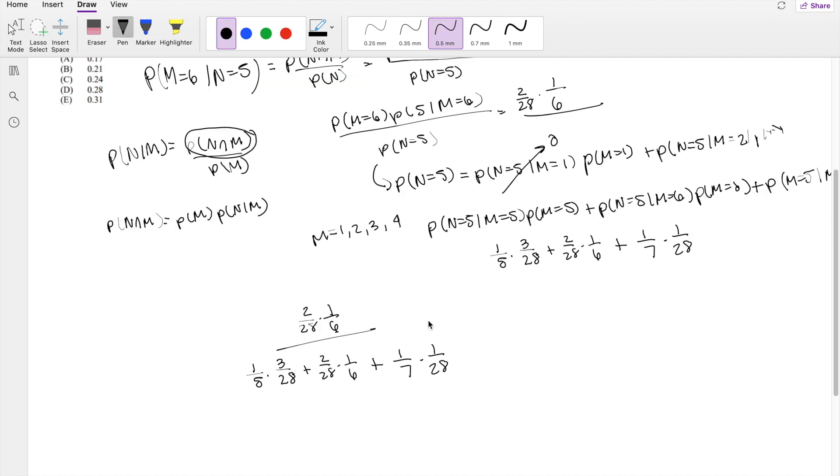So everything you can see is multiplied by 1 over 28, so we can just factor that 28 out. So you're left with 2 over 6 divided by 3 over 5 plus 2 over 6 plus 1 over 7, which is equal to 2 over 6 divided by 113 over 105, which is equal to 0.309734 and so on, which is approximately equal to 0.31, which is your answer E.